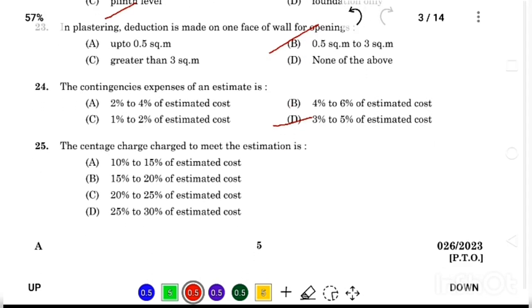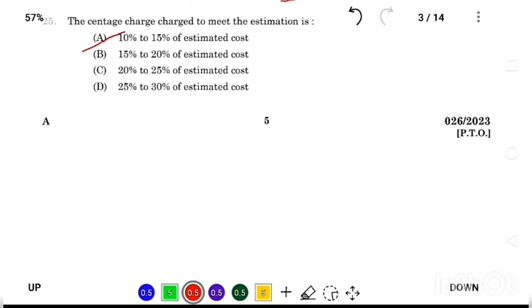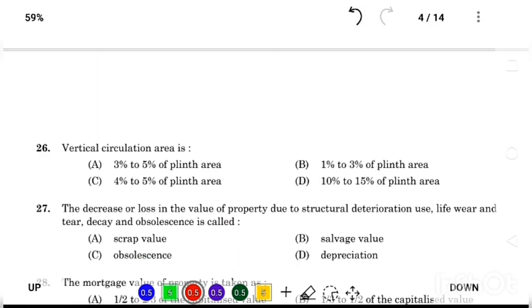The percentage charges to meet the estimation is Answer Option A, 10% to 50% of estimated cost. Vertical circulation area is Answer Option C, 4% to 5% of plinth area.